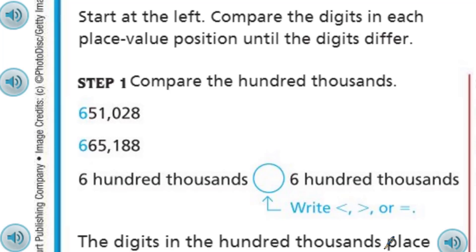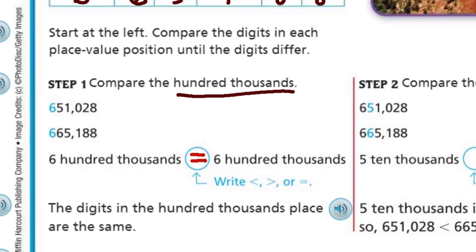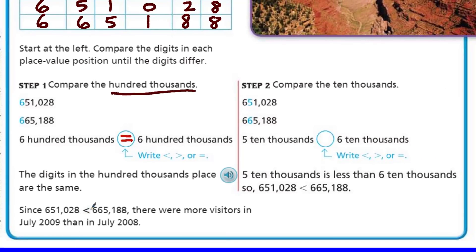Now, it does say start at the left. Compare the digits in each place value position until the digits differ. Differ. What a weird word. It just basically means how are they different. So, step one. Compare the 100,000s. We're going to go straight to the thousands period because we always want to move to the greatest place value, which in this case is going to be the 100,000.